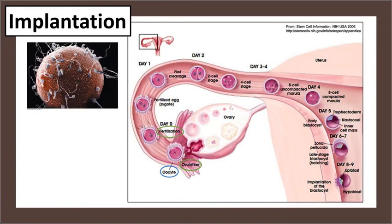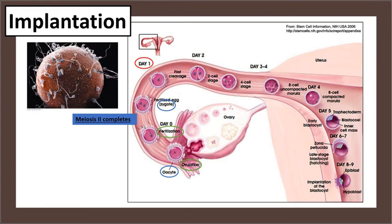Now remember, right before the two combine, you have the last part of oogenesis where cell division happens and that last polar body is formed. Then the two nuclei combine — you have a zygote with a single nucleus. All of that takes place within one day. Now, it takes a little longer than you might think because it hasn't even made it to the uterus yet. Also notice that fertilization happens in the upper part of the fallopian tubes — lots of people think it happens down in the uterus, but it doesn't.